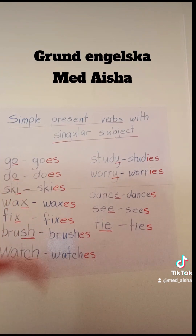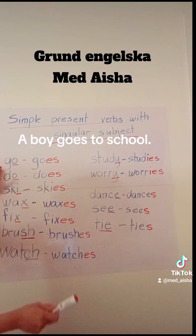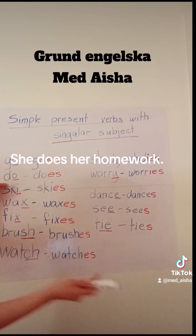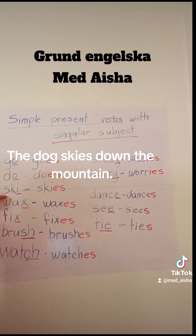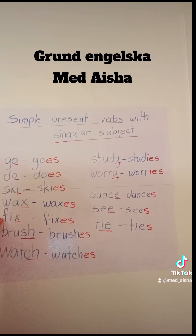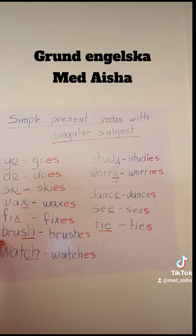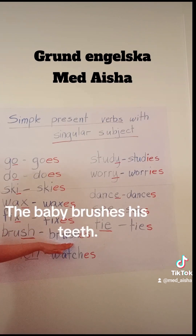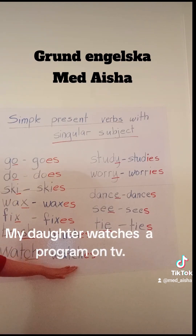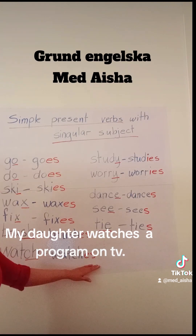For example: a boy goes to school. For example, she does her homework. For example, the dog skis down the mountain. For example, she waxes her arm. He fixes his telephone. The baby brushes his teeth. My daughter watches a program on TV.